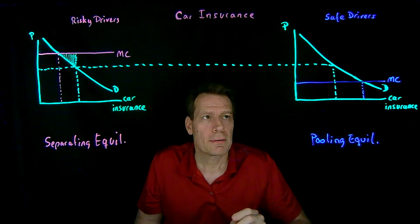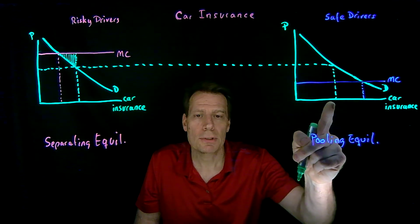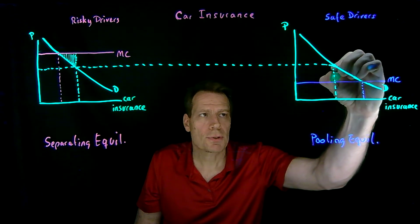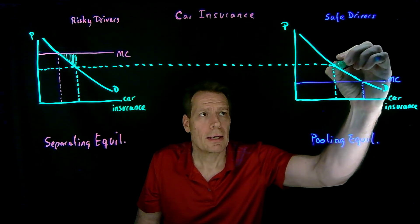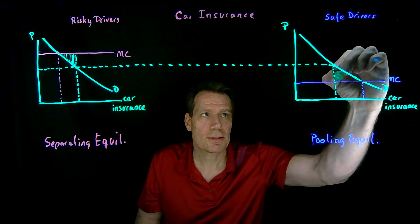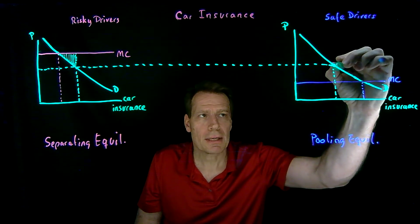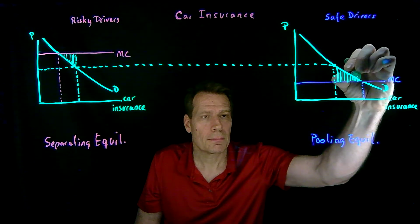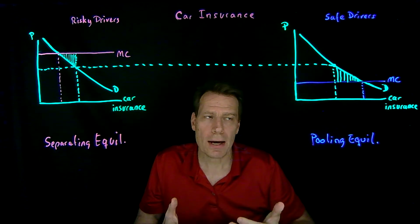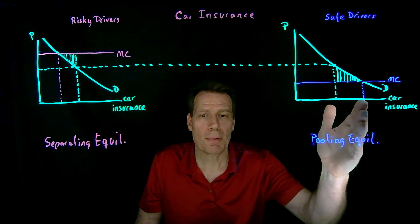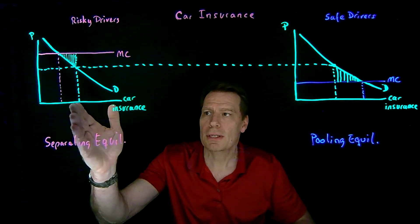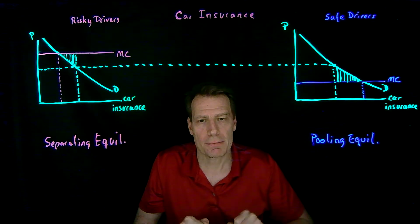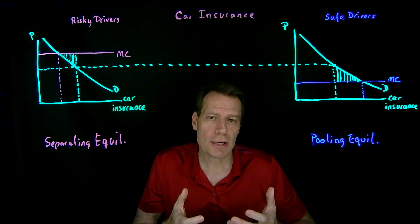For safe drivers, the opposite happens — they buy too little insurance. The last insurance level they buy had a marginal benefit greater than the marginal cost, and the next level would also have a marginal benefit greater than the marginal cost. So by stopping there, we're not capturing possible surplus that we could be getting. Deadweight losses arise because safe drivers buy too little and risky drivers buy too much insurance when they're pooled together and charged the same price.